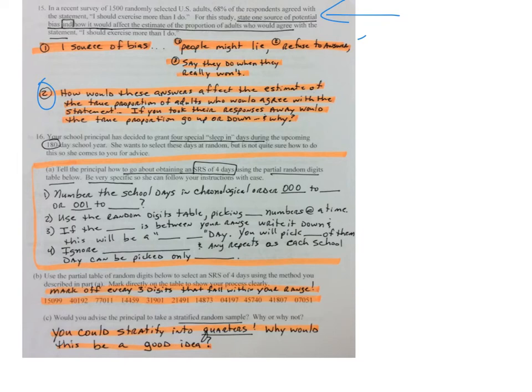On number sixteen, fill in the blanks. I've numbered the four things that you need to know: number the school days in chronological order from zero zero zero to [blank], or from zero zero one to [blank]. Use the random digits table, picking [blank] numbers at a time. If the [blank] is between your range, write it down. This will be a [blank] day.